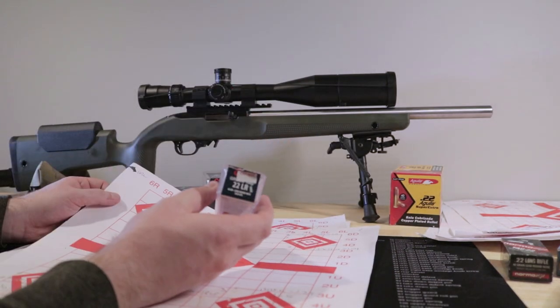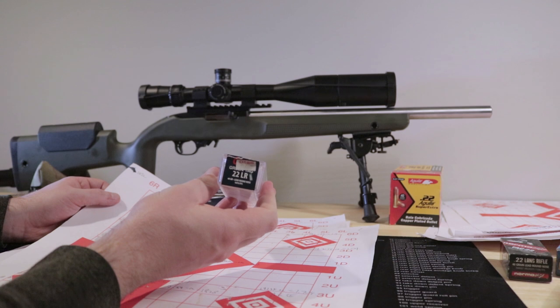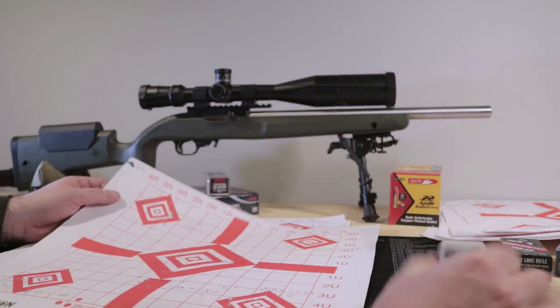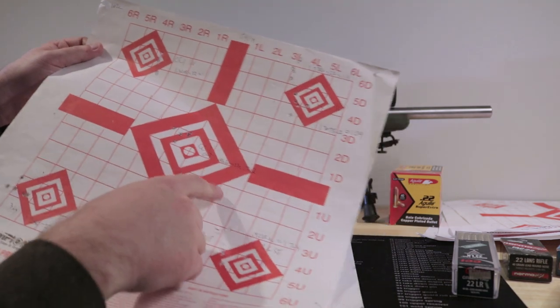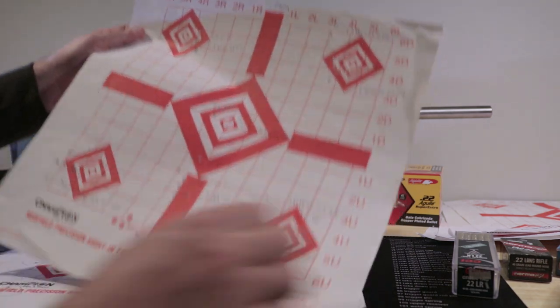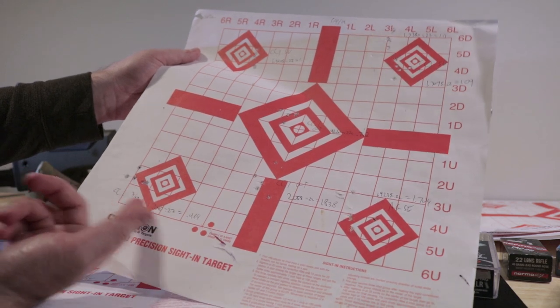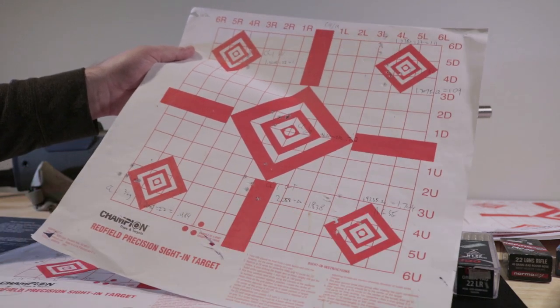We've got Green Tag. This is $17 a while ago. This is CCI's match ammo. First group was .742. And then 1.8. CCI's 36 mini mags .9, 1.7.